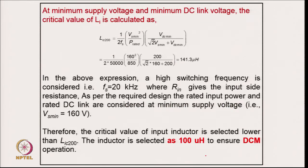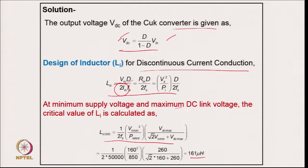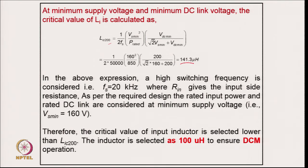For rated conditions the boundary value is 161 μH, and for the minimum supply voltage of 160 V it comes to 141.3 μH. The input resistance R_in is based on desired power and minimum input voltage of 160 V. The critical value is taken at 200 V output, and the inductor must be well below both calculated values. An inductor of 100 μH is selected to ensure DCM over a wide voltage range and load range.